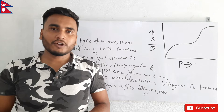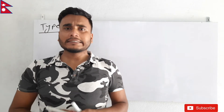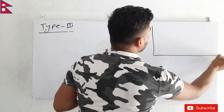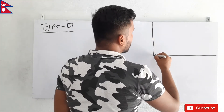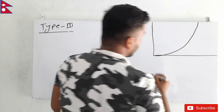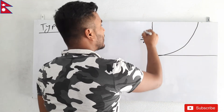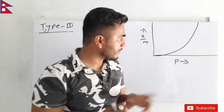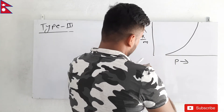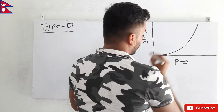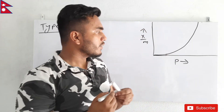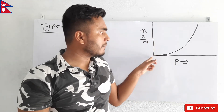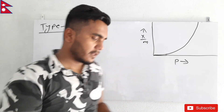Now let's see Type 3 adsorption isotherm. In this isotherm the curve has y-axis as x/m (extent of adsorption) and x-axis as pressure. In this type of curve, with increase in pressure the value of x/m is increasing exponentially.